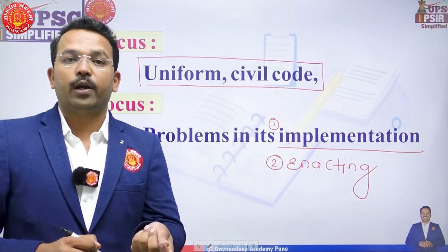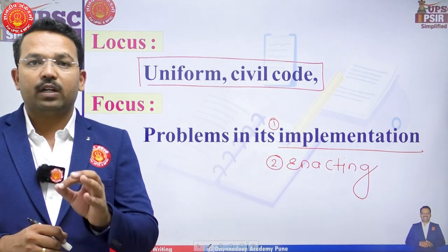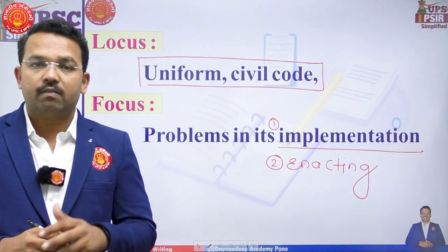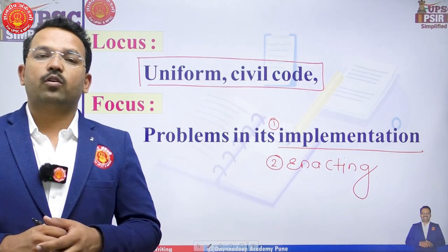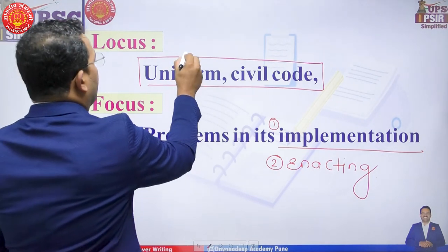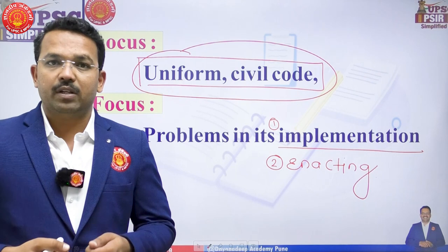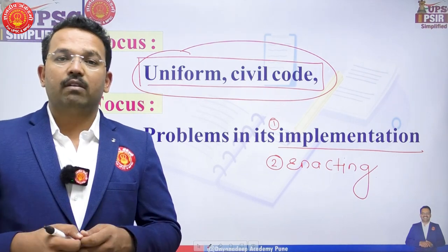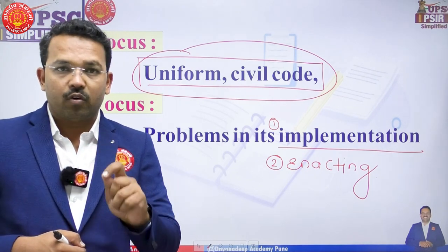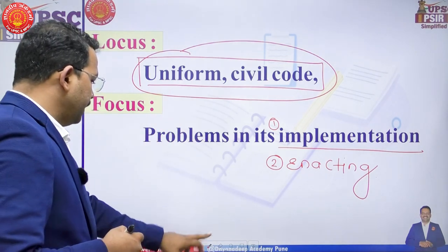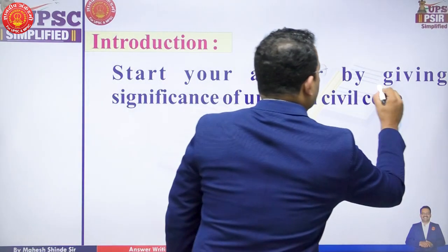As we have discussed in many questions, 25 to 30 percent of your answer should cover the locus, while 65 to 75 percent should address the focus. The common mistake most students make is writing a lot about what the Uniform Civil Code is — its meaning, its origin — wasting 60 to 70 words on something that is not the focus of the question.